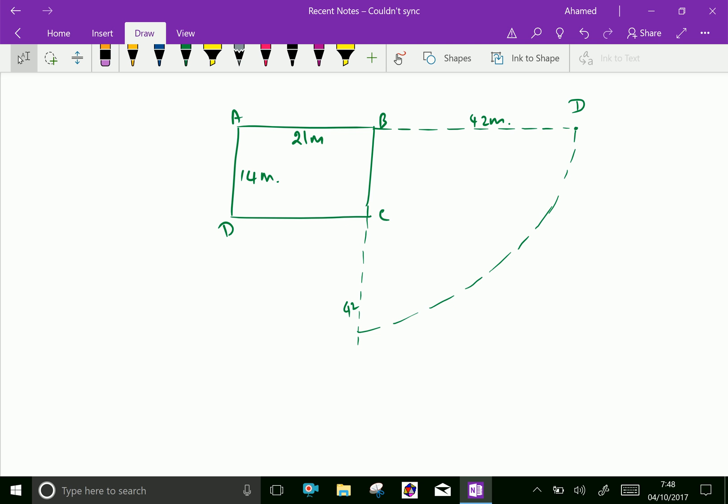After that, here, this is 14m. Therefore, 42 minus 14 is 28m. Here, this is 28m from C to E.